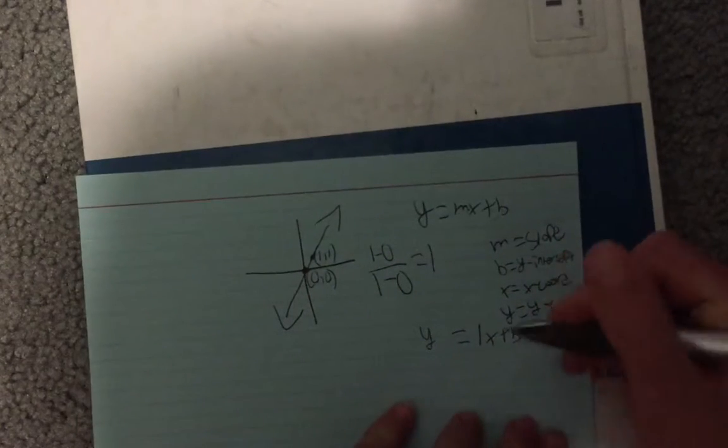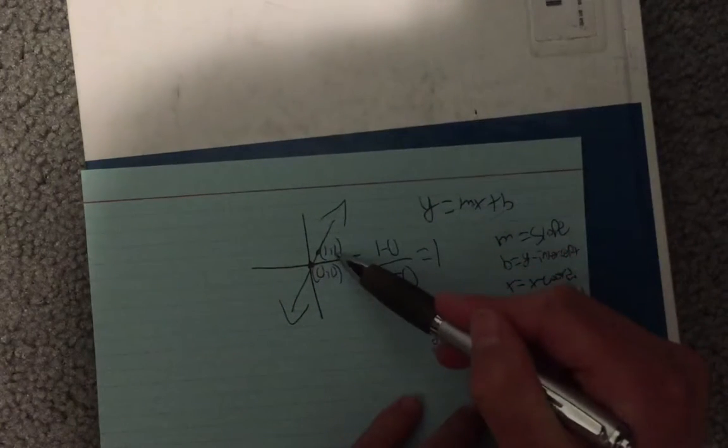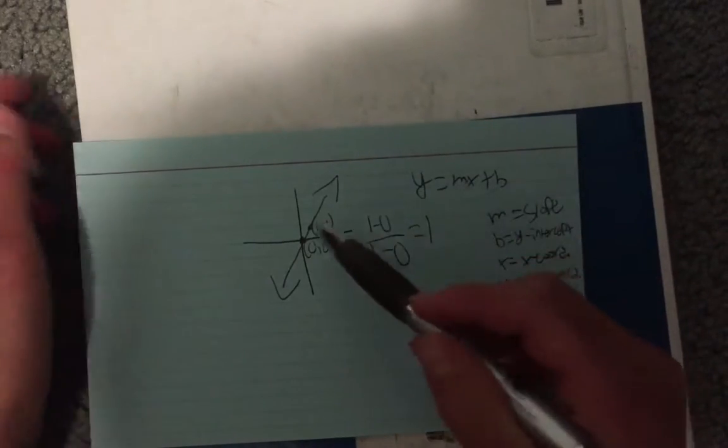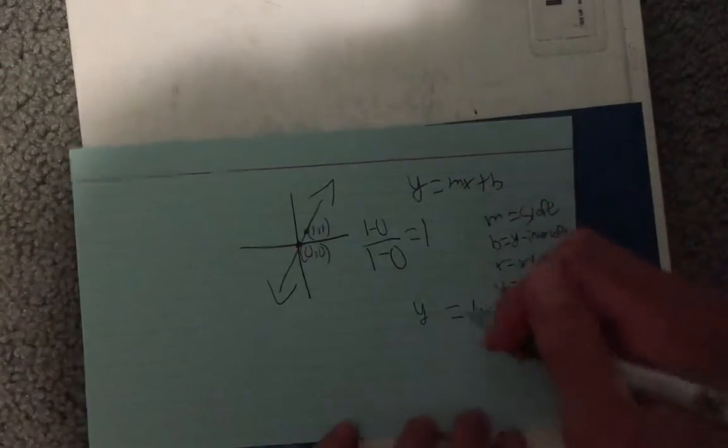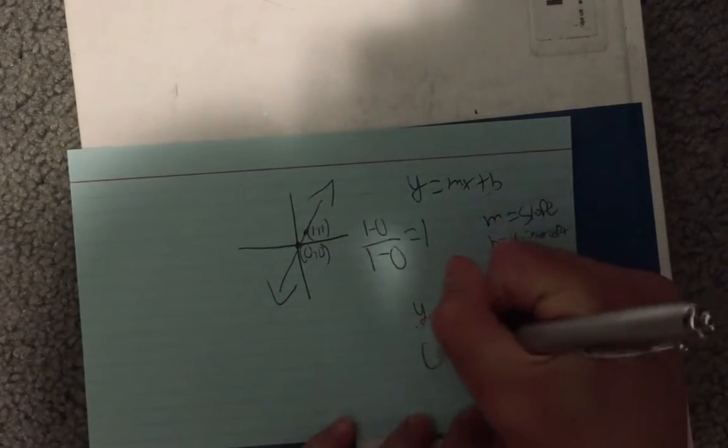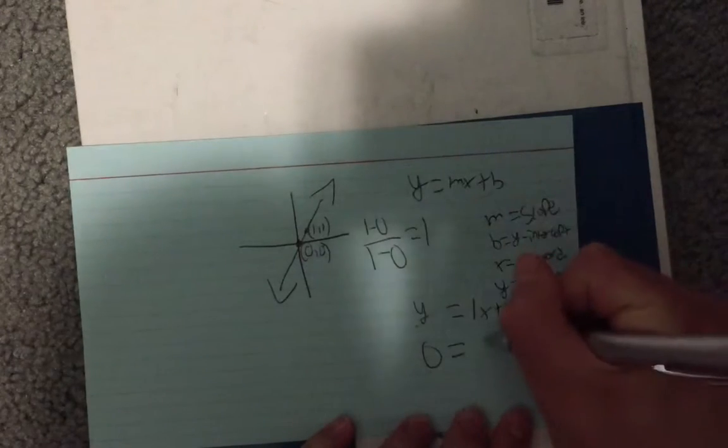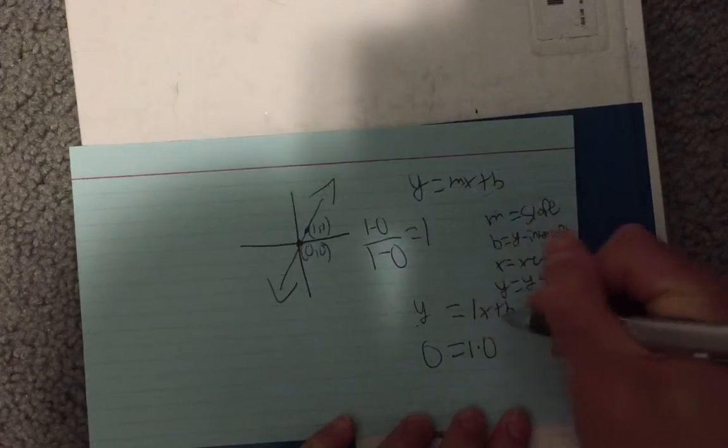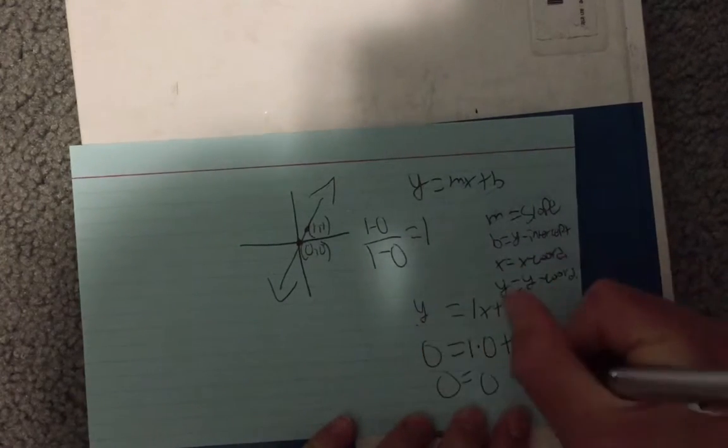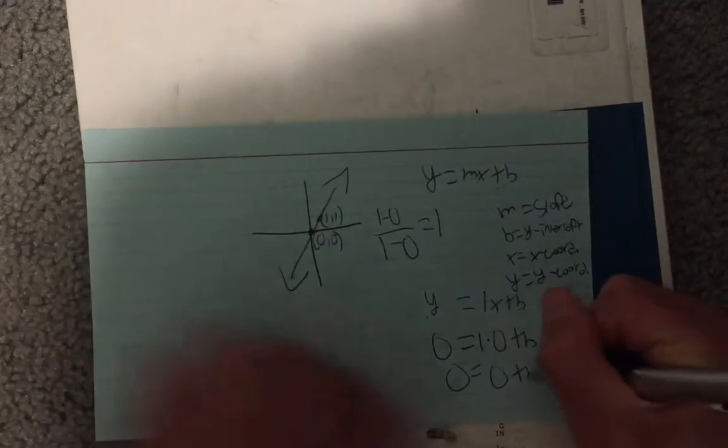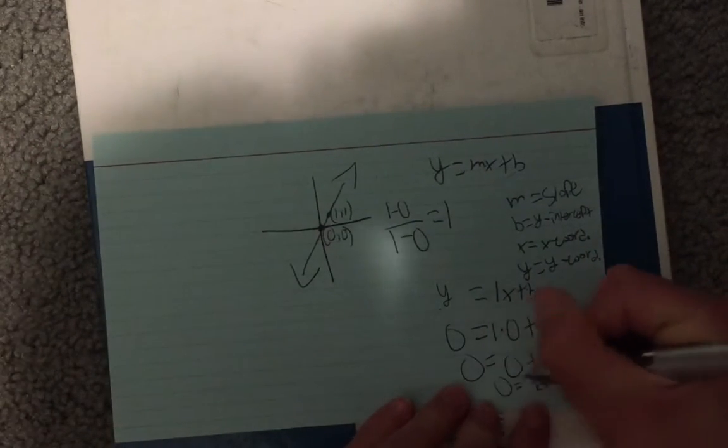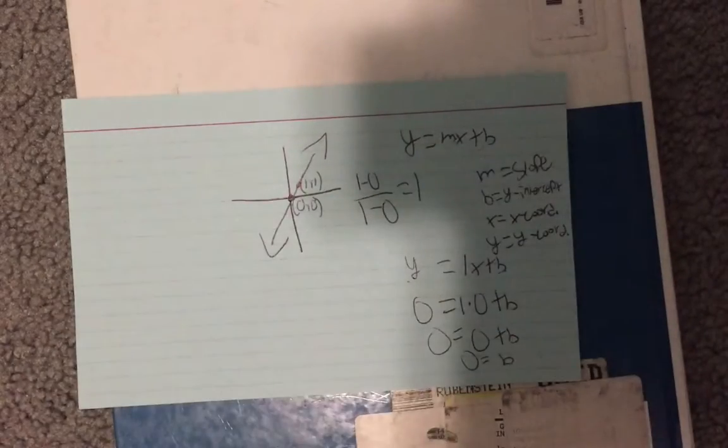Now in order to find b, you're going to have to plug in any one of these points in to isolate b. So for example, let's just choose zero, zero, because it's the easiest. So you plug in this zero for y, this zero for x. One times zero is zero. Zero plus b is just b, b equals zero. So you have b equals zero.